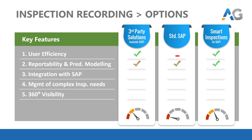The second feature is reportability and predictive modeling. Third-party products have limited capabilities here due to the missing work management information, as they rely on SAP for most of the non-inspection related data, which imposes a limitation on them. Standard SAP lacks the tools required. Therefore, the first two options take you halfway there, whereas Smart Inspections, with all the data in a single platform and dedicated reporting and modeling tools, scores higher than them.